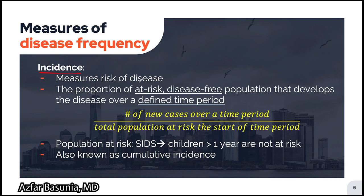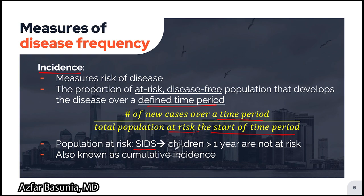Now incidence measures the risk of disease. It is broadly defined as the proportion of at-risk, disease-free population that develops the disease over a defined time period. We calculate incidence by dividing the total number of new cases over a time period by the total population of at-risk individuals at the start of the time period. Population at risk includes individuals who can develop the disease, so this excludes individuals who already have the disease as well as individuals who won't be affected by the disease.